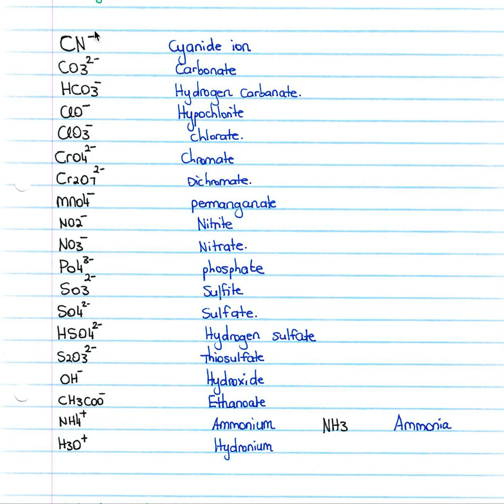So firstly, you need to know your cyanide ion is CN minus, remembering that your minus is an indication of your charge, so this would be one minus. Carbonate you need to know is CO3 2- so two minus is your charge. Hydrogen carbonate you need to know is HCO3 minus.